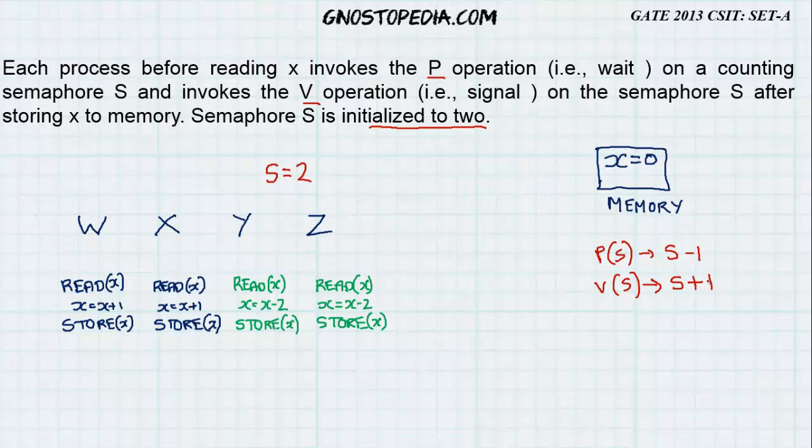Decoding this question, it will look something like this. Hence, this section of code is actually guarded by P of S and V of S, i.e. wait and signal operations respectively. Now, S equal to 2 only tells me that two processes can enter the section of code at the same time and not more than 2.